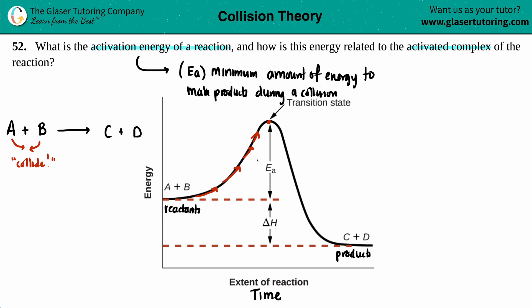That energy from where you started to the tippy, tippy top is the activation energy. This is the minimum amount of energy that's needed to make your products. If A and B collide, and they collide at a really, really slow rate, they won't have enough kinetic energy to get over the predetermined activation energy needed for this reaction.